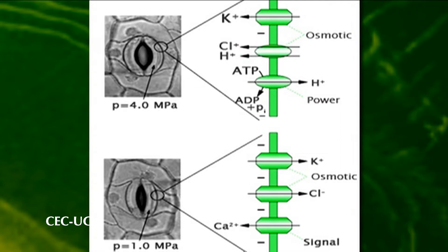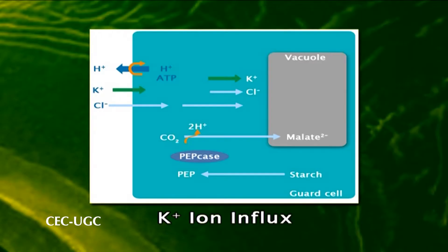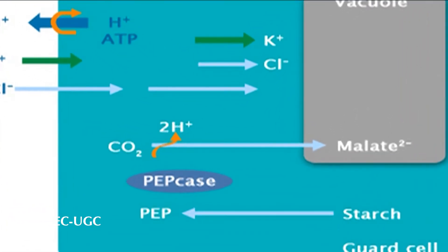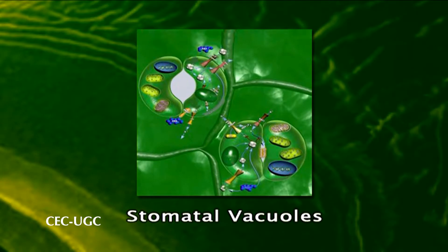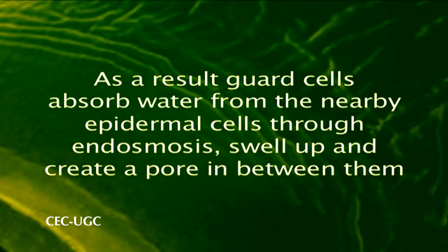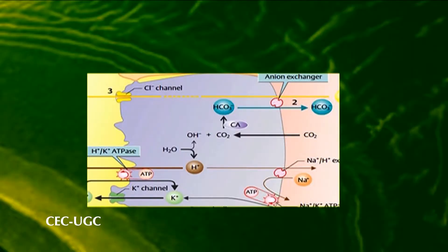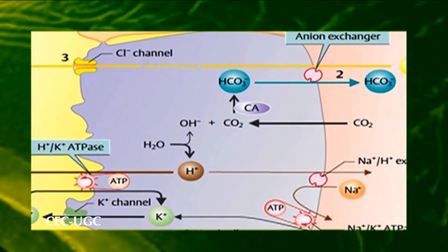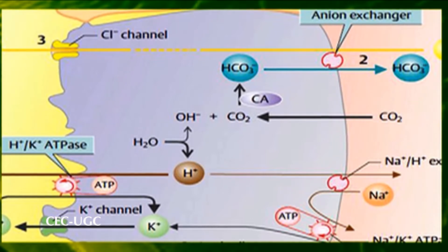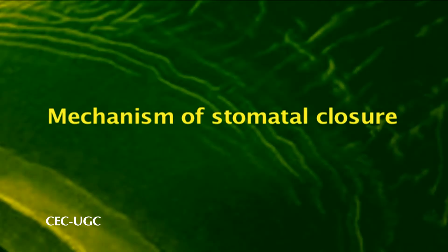Guard cells maintain their electroneutrality by balancing potassium ions with malate and chloride ions. In the combined state, they pass into the small vacuoles and increase the osmotic concentration of the guard cells. As a result, guard cells absorb water from nearby epidermal cells through osmosis, swell up, and create a pore between them. The influx of potassium ions and proton efflux is energized by the H⁺/K⁺ ATPase pump; for every molecule of ATP hydrolyzed near the plasma membrane, one potassium ion enters the cytoplasm in exchange for one proton.